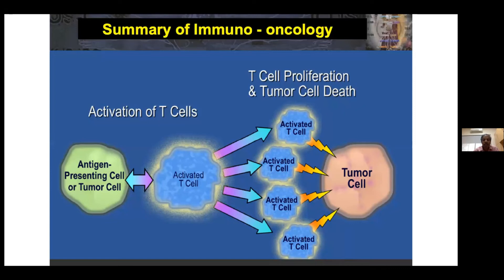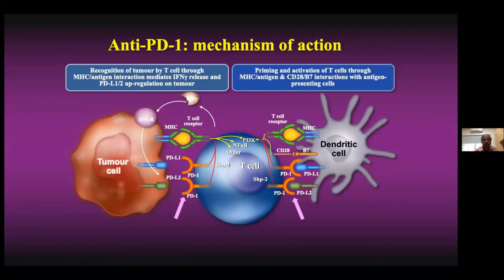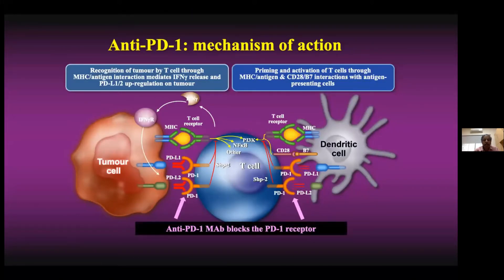This simplified slide explains what immuno-oncology is about. We need T-cells in the body to become activated, either through the antigen-presenting cell or the tumor cell. This activated T-cell, by various mechanisms, acts on the tumor cell and produces cell death. In very simple terms, that is the summary of immuno-oncology.